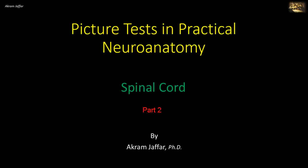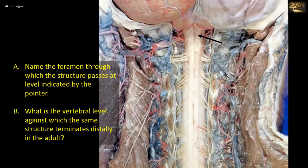Now I will deal with the spinal cord. Name the foramen through which the structure passes at the level indicated by the pointer. What is the vertebral level against which the same structure terminates distally in the adult?